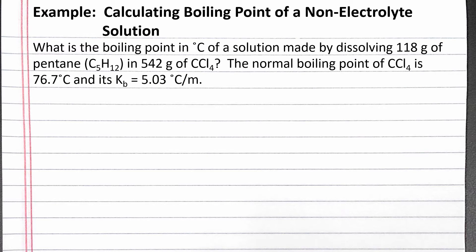We can start with our equation for the change in boiling point, which equals the van't Hoff factor times the molality times the boiling point elevation constant. To calculate molality, we need the moles of pentane, which is the solute, and the kilograms of carbon tetrachloride, which is the solvent.